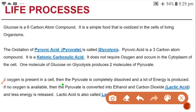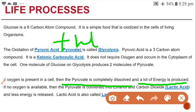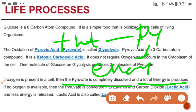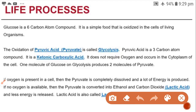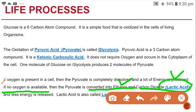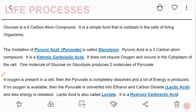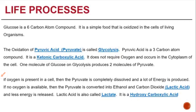If oxygen is present, pyruvic acid is completely converted and a large amount of energy is produced. If there is no oxygen, it will convert into ethanol and carbon dioxide, or into lactic acid in muscles, releasing less energy and causing cramps.